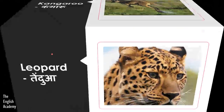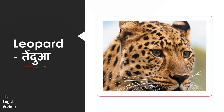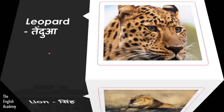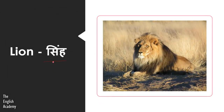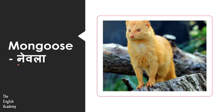The next animal is Tendua — Tendua we call Leopard in English. Next we have Sing — Sing in English is Lion. The next animal is Nevla, known as Mongoose.